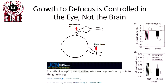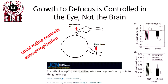Research also shows that growth toward the focal point is controlled in the eye, not in the brain. We know this because researchers cut the optic nerve and the ciliary nerve in animal models, so the brain can't send any signals to the eye. When lens or form deprivation experiments are then performed, the eye still responds to defocus signals even with the nerve cut and no brain input. This confirms that local retinal processes control emetropization and the growth to optimize refraction — it's a retinal process, not a brain process.